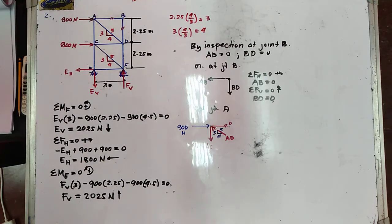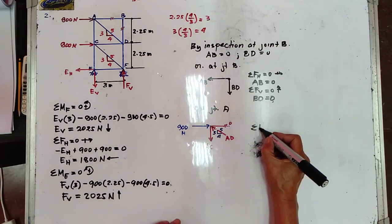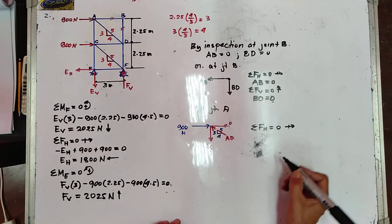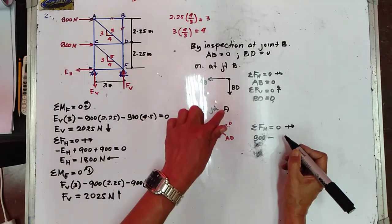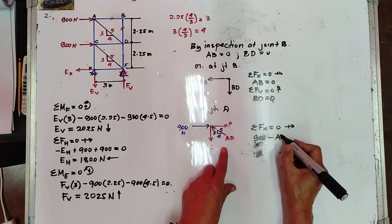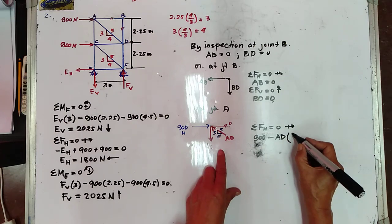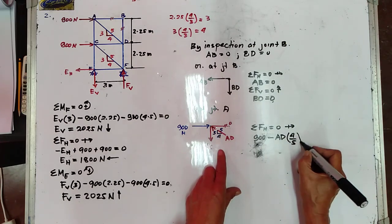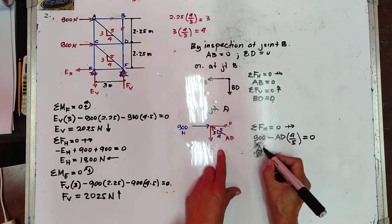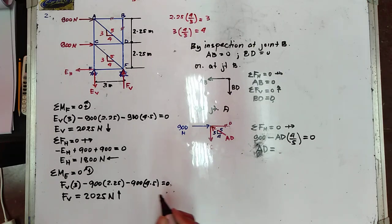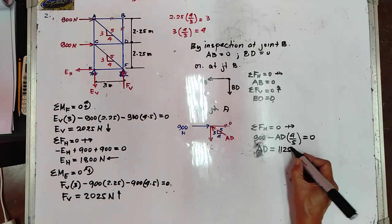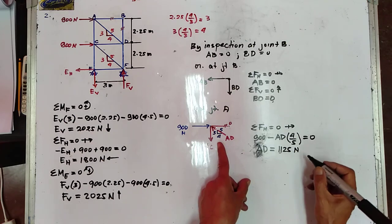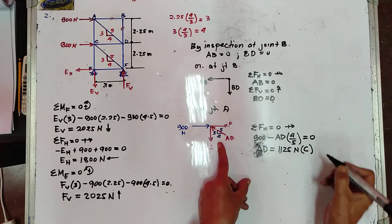Summation of forces horizontal equal to zero, to the right positive: 900 − AD × (4/5) = 0. Therefore AD = 1125 N. We get a positive value, so the assumed direction is correct and AD is in compression.